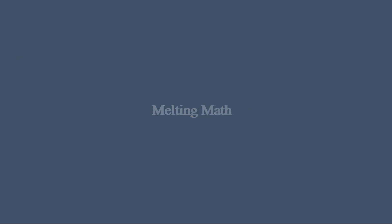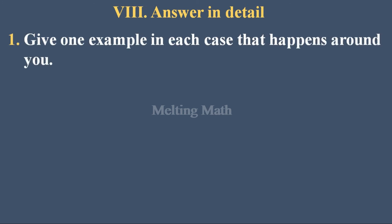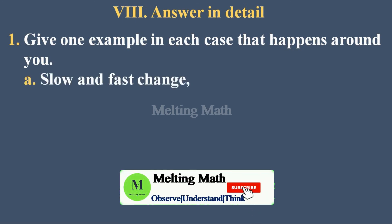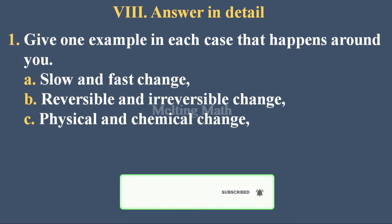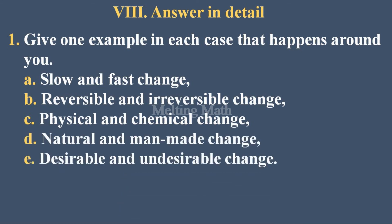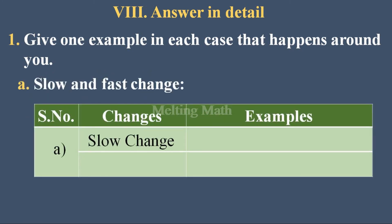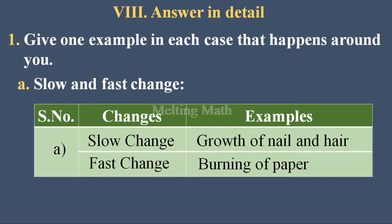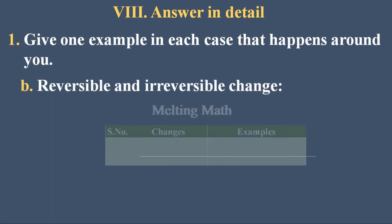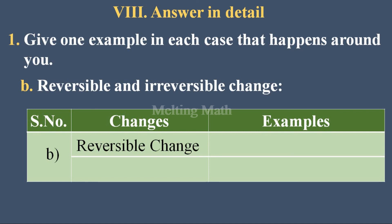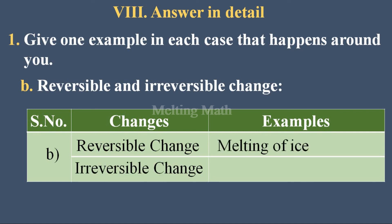Eighth section: Answer in detail. Question one — give one example each for the following: slow and fast change, reversible and irreversible change, physical and chemical change, natural and man-made change, desirable and undesirable change. Slow change example: growth of a nail. Fast change example: burning of paper. Reversible change example: melting of ice. Irreversible change example: change of milk into curd.